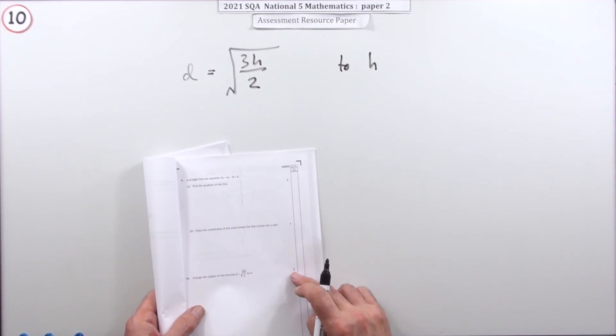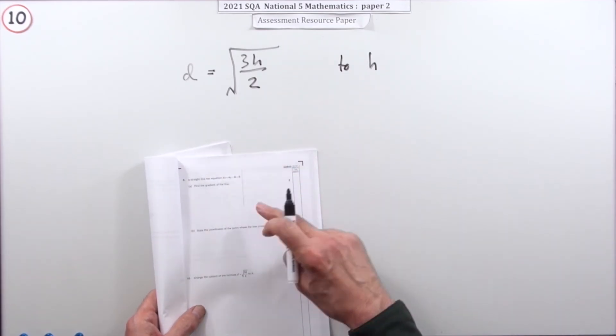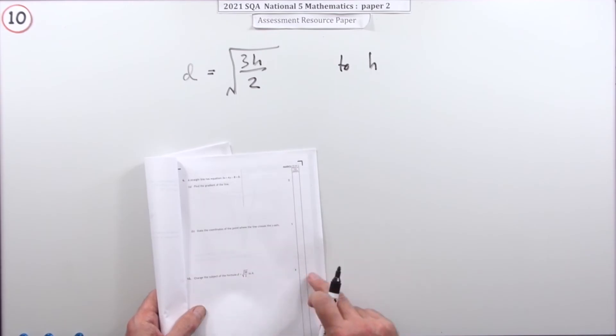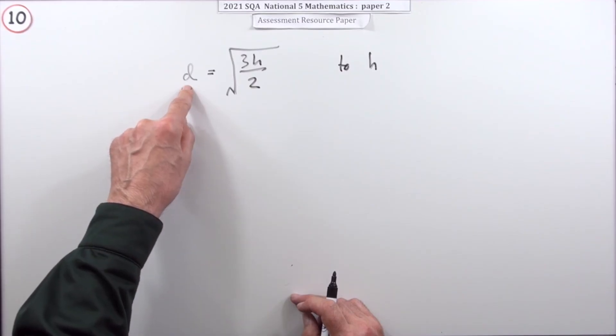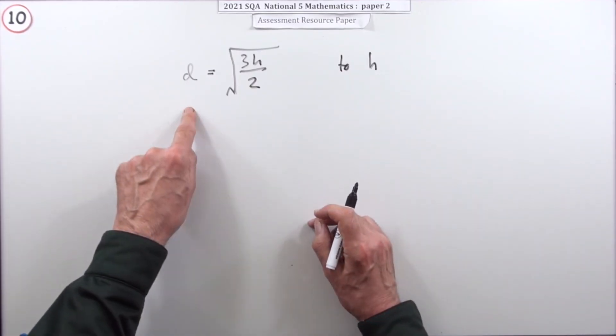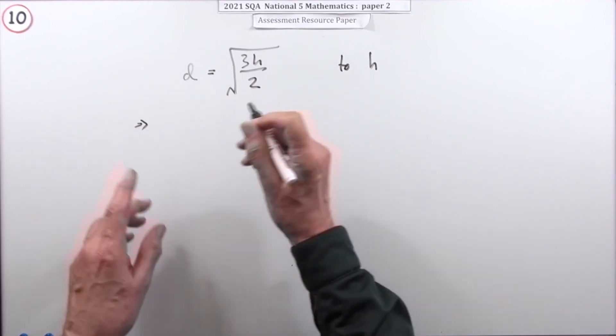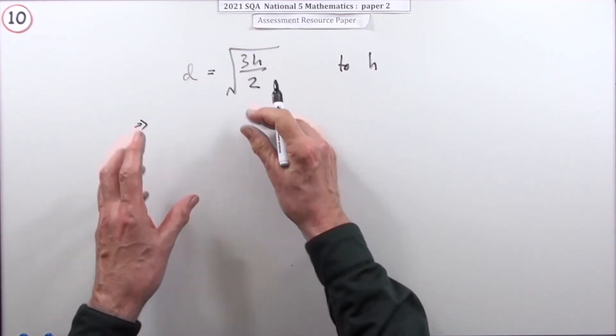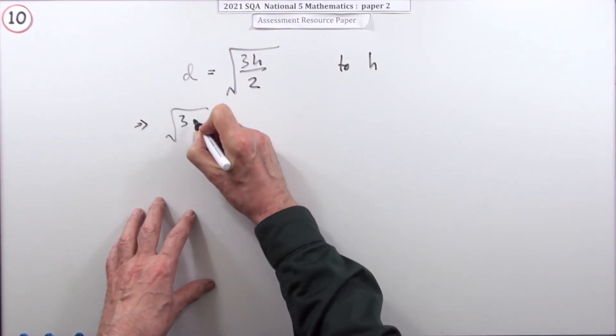Number 10, for three marks: change the subject of a formula. Following on from the last question, another very simple one. Instead of d equals that being the subject, you want to rearrange so it's h on its own at the front. One thing you can do when copying it down is write it the other way around.